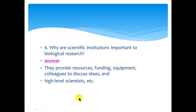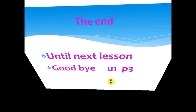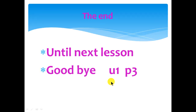The sixth question: why are scientific institutions important to biological research? The answer: they provide resources, funding, equipment, and colleagues to discuss ideas, as well as high-level scientists. This is the end of the lesson. Goodbye.